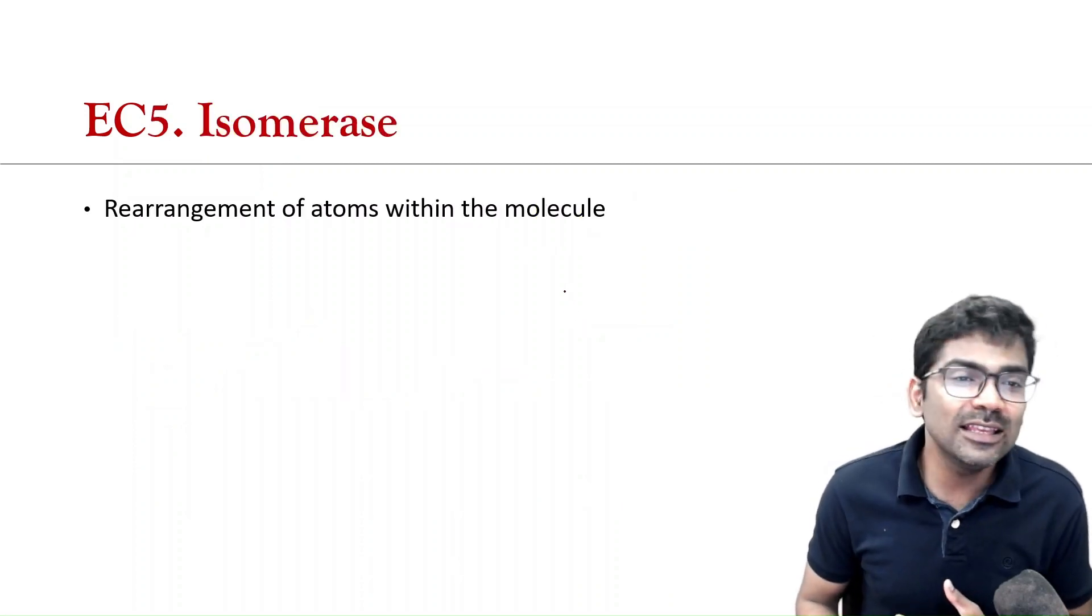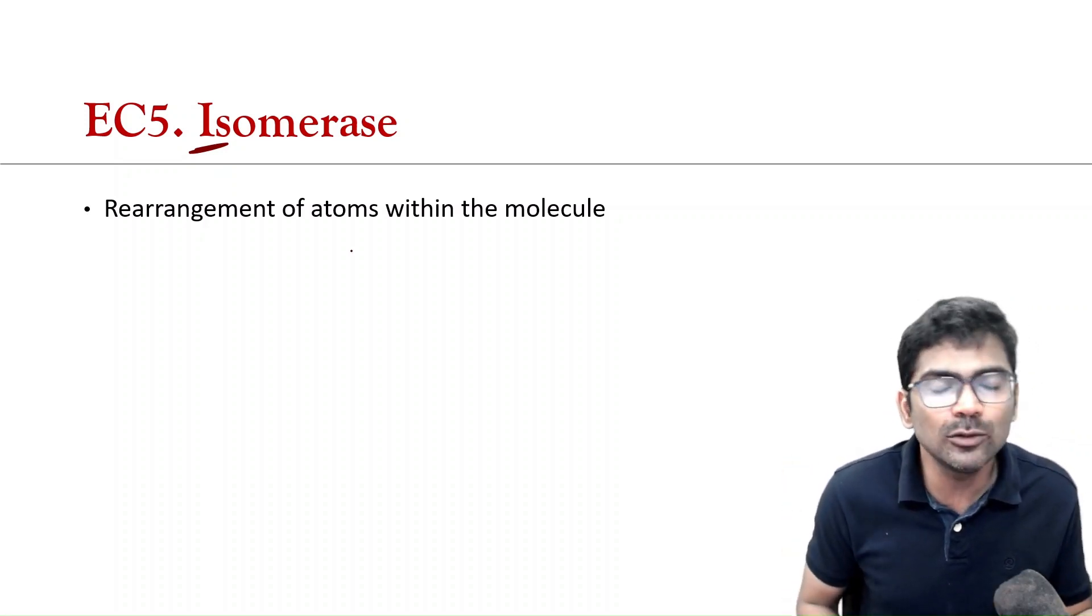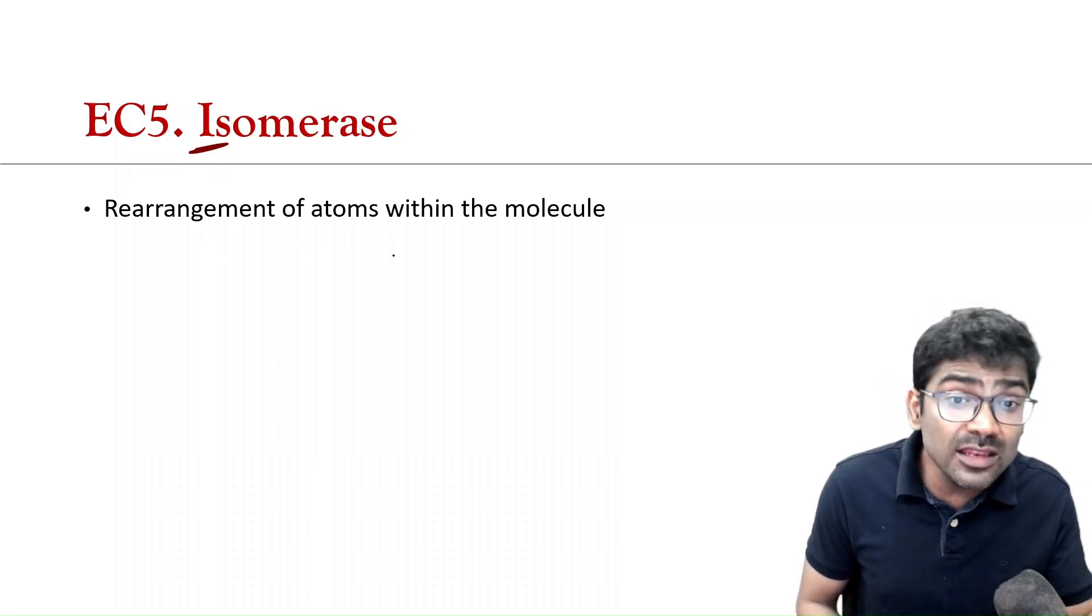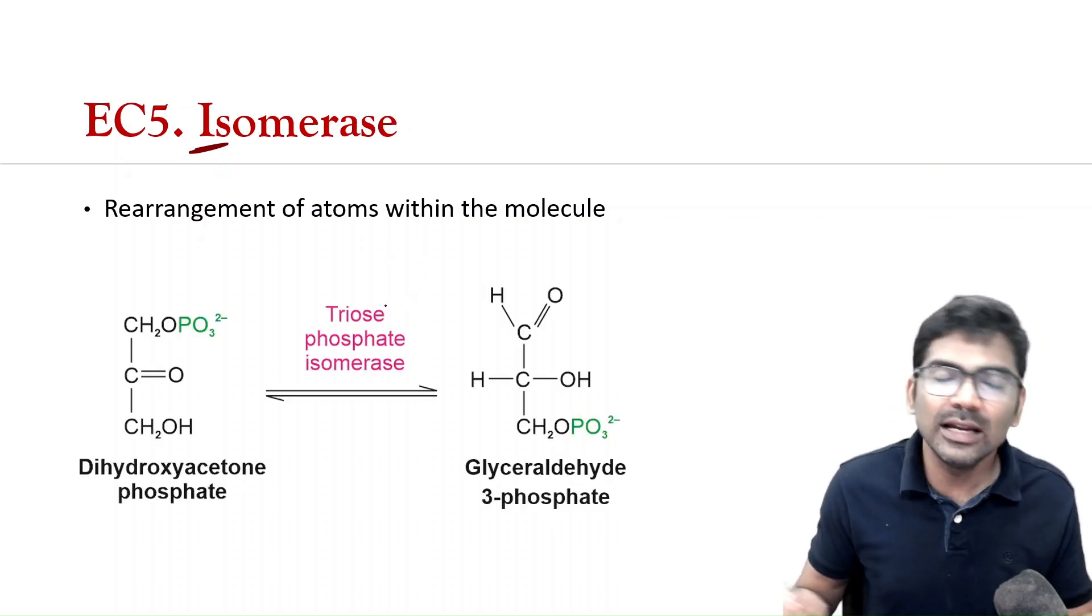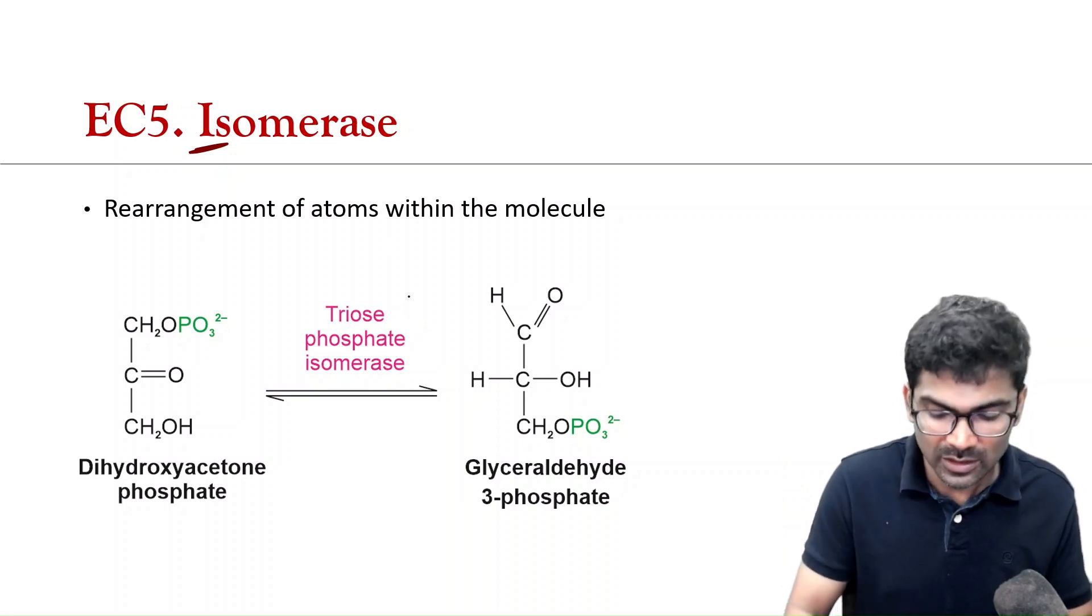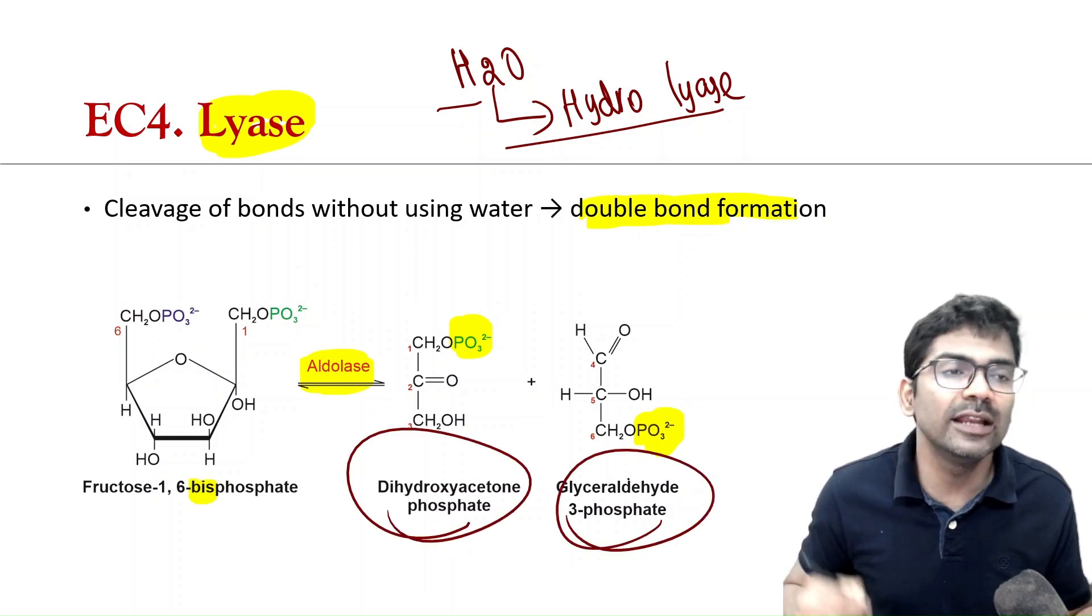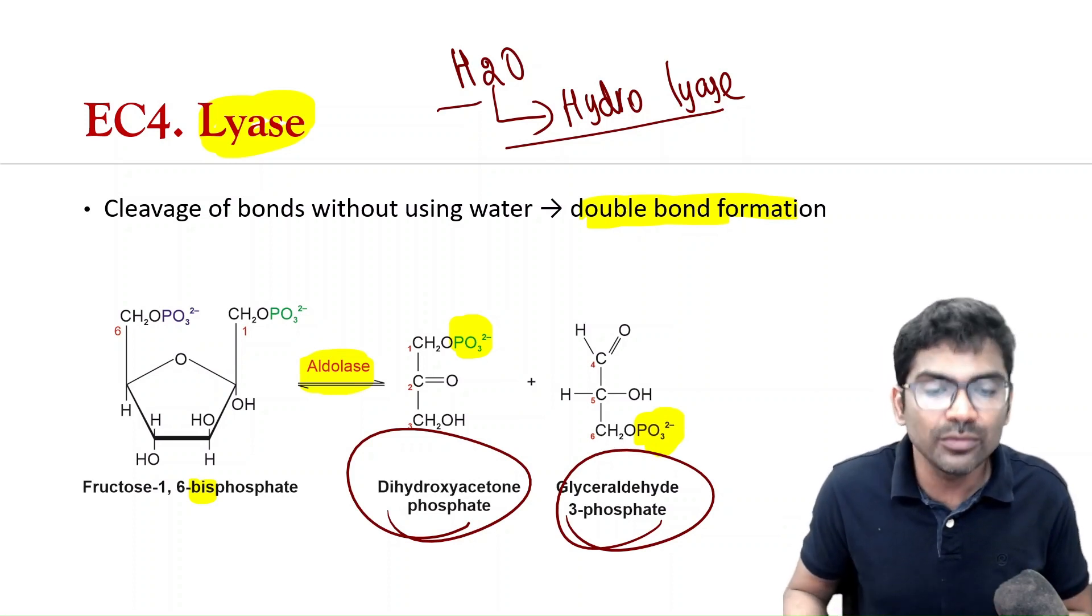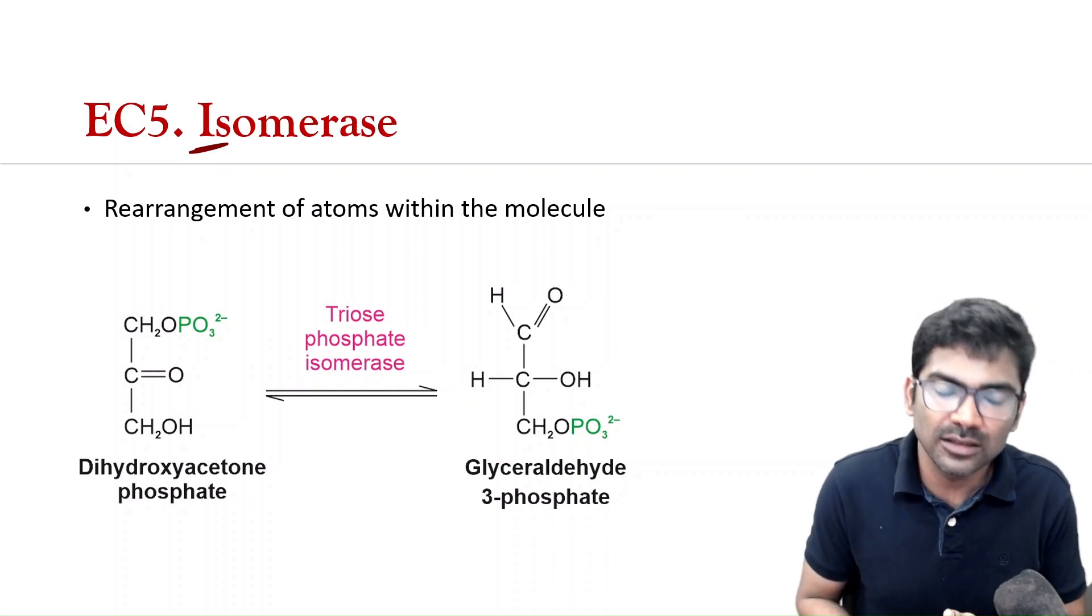The fifth category is isomerase. You all know what are isomers. So, it is very easy to understand this. Isomerase catalyzes rearrangement of atoms within the molecule, intramolecular rearrangement. Let us take the example of glycolysis. Triose phosphate isomerase. In the previous reaction, we have seen that DHAP and glyceraldehyde-3-phosphate, they are produced. They are isomers of each other. So, they can be inter-converted.